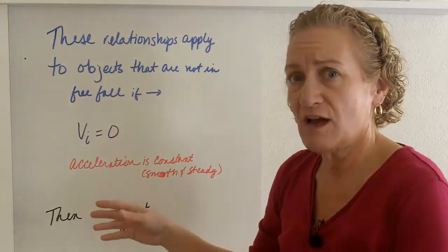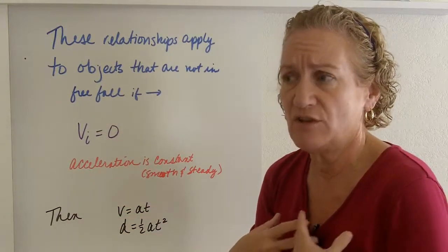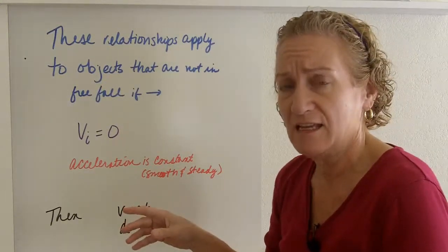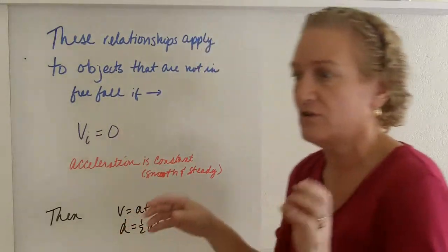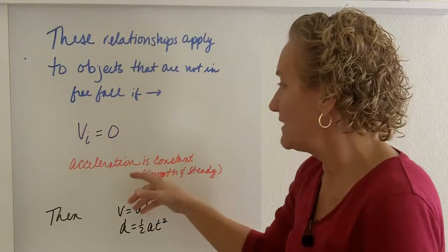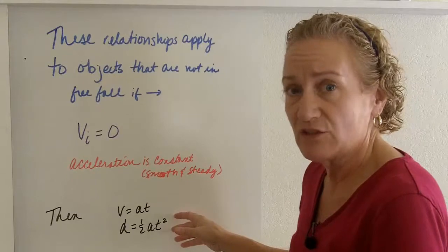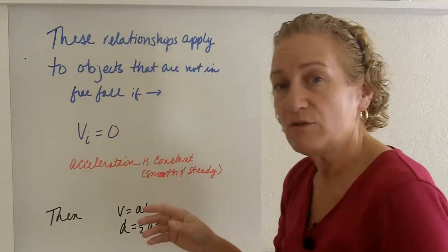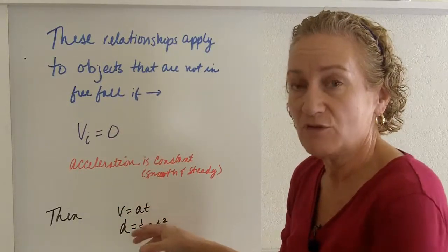The other thing that you have to have is you have to have a constant acceleration. Now you know when you're in constant acceleration. You can feel it on your body because it's smooth and steady. It's not jerky. You know how sometimes in the car you go like this, you go like that, right? This is where it's smooth and steady. And if acceleration is constant, initial velocity is zero, then you have these relationships. Then these two relationships are true. But you need to have both of those conditions in order to have these equations be true.